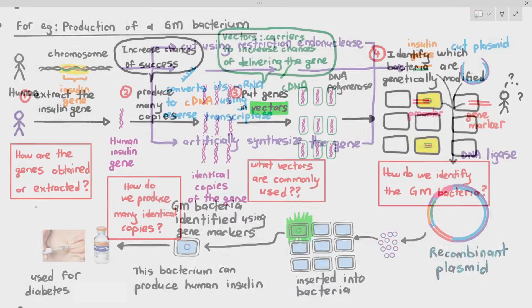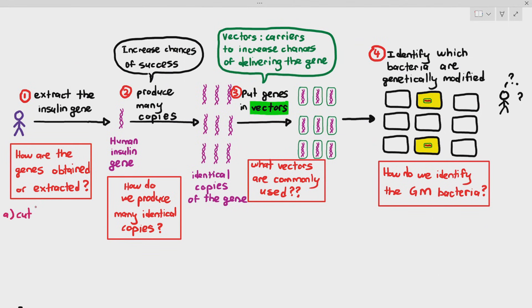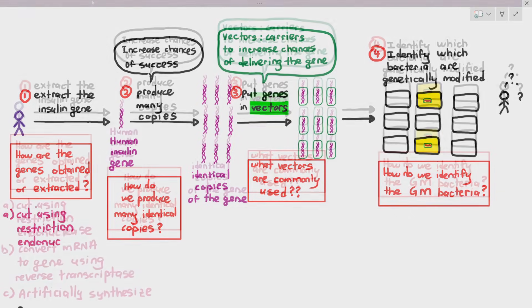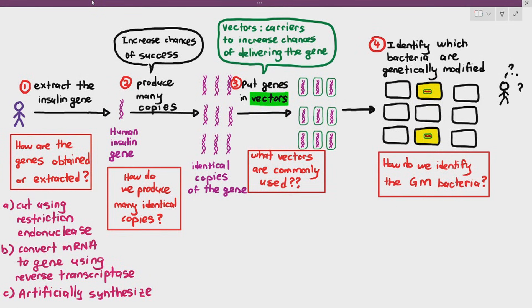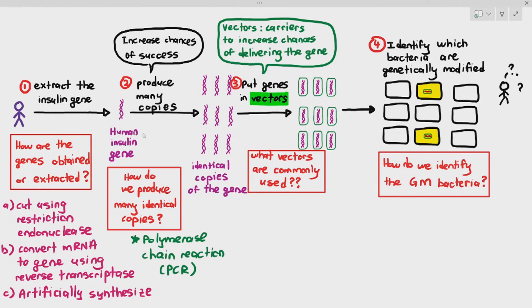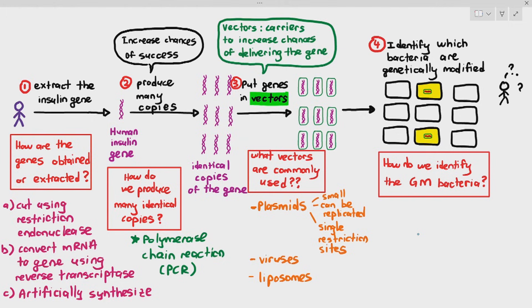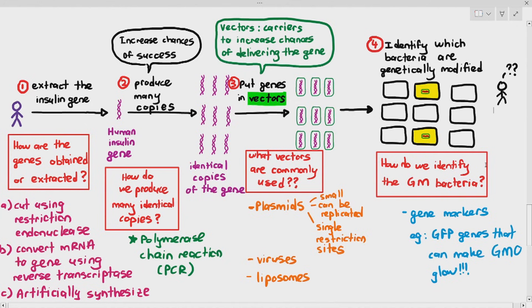To answer the key questions: how are genes obtained? You can cut the chromosome using restriction endonuclease, or convert mRNA to a gene using reverse transcriptase and DNA polymerase, or artificially synthesize it using a DNA synthesizer machine. How do we produce many identical copies of the gene? Polymerase chain reaction — to be covered in the next videos. What vectors are commonly used? Plasmids, which are small circular DNA — used when modifying bacteria because they replicate easily, have single restriction sites, and are extremely small. We can also use viruses and liposomes as vectors. How do we identify the genetically modified bacteria? We use gene markers — for example, GFP genes that make the genetically modified organisms glow. This is the final part of recombinant DNA technology.